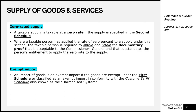Those who watched the first video will remember I showed a table of rates and said one of the rates is 0%, which applies to zero-rated supplies. There is a list on the second schedule — you can find that in the second schedule of our VAT Act 870 — and anything listed there is subject to VAT but at a rate of 0%.